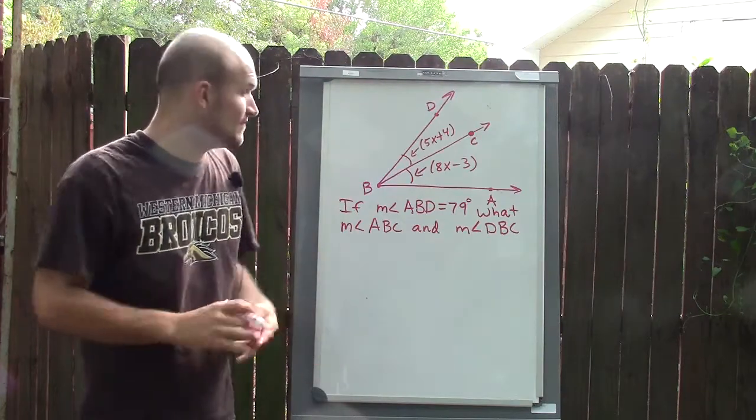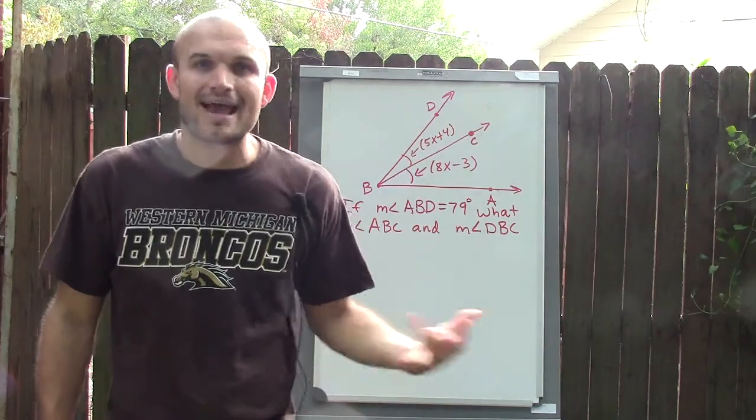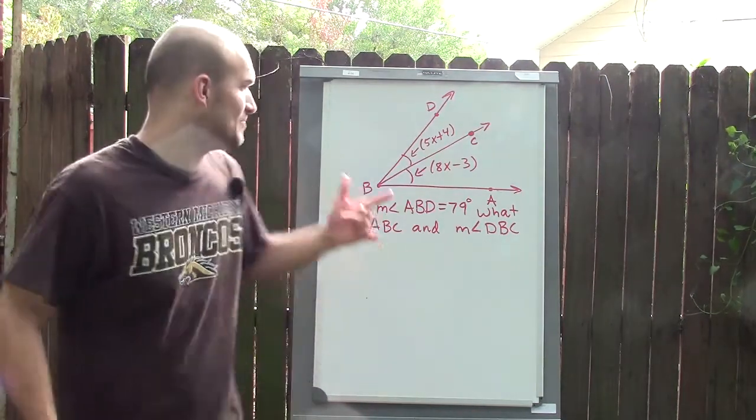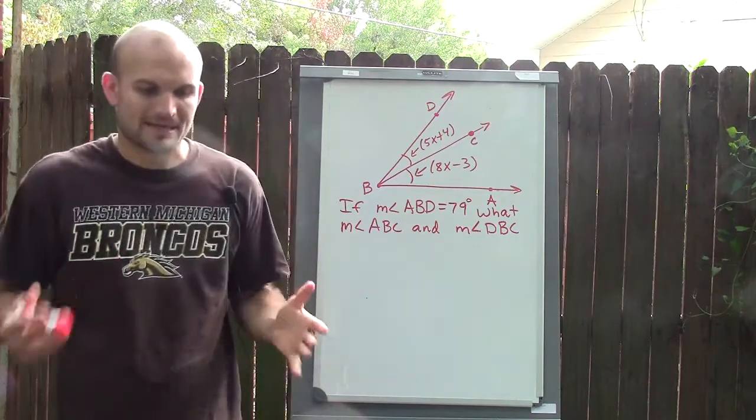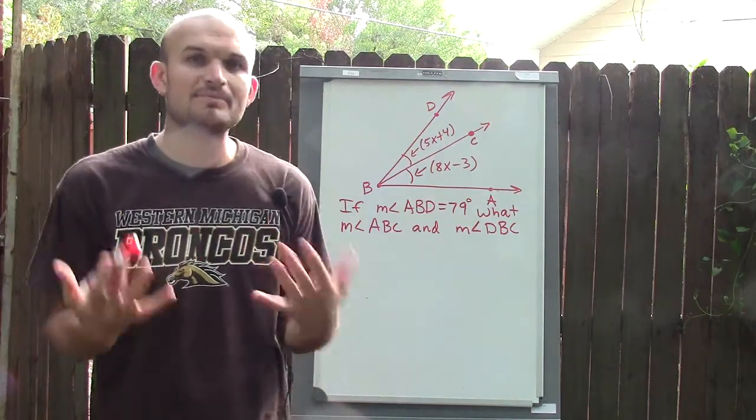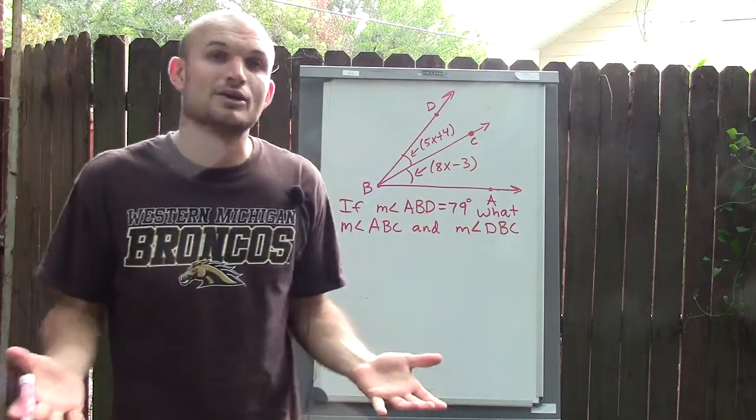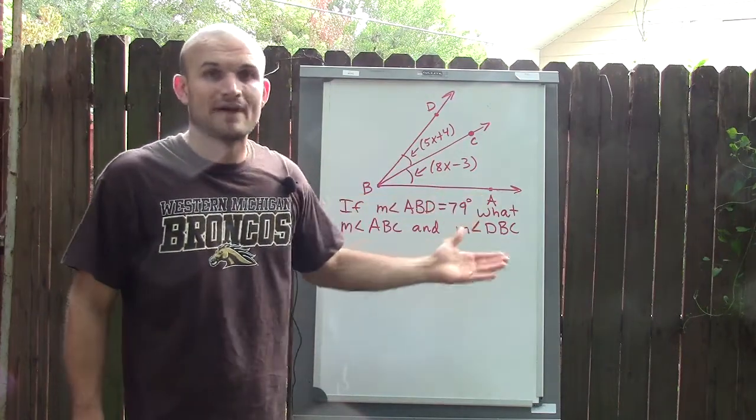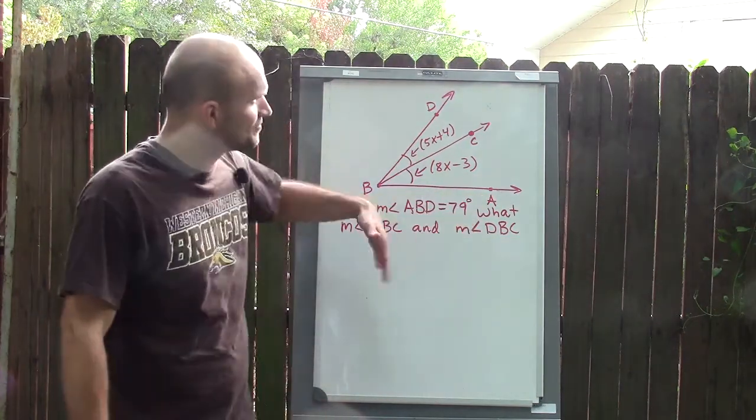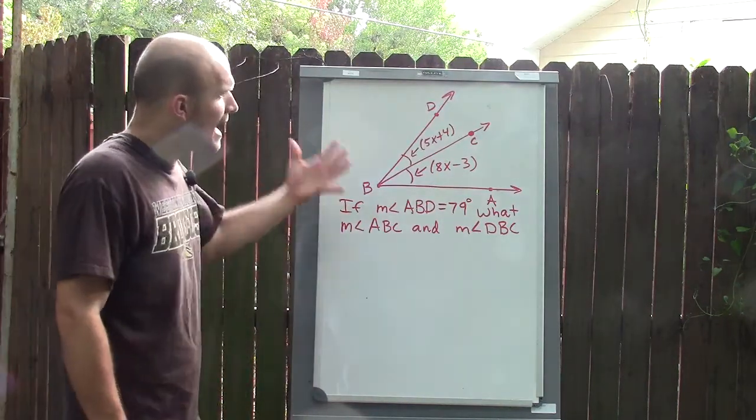The only thing we're given is two expressions for the angles, but the expressions have a variable in them—they both have an X, which is our unknown. That automatically tells me that when I'm solving for this, I need to find the value of my variable X. Once I know the value of my variable X, I can plug in those values for each angle to find the value of each angle.